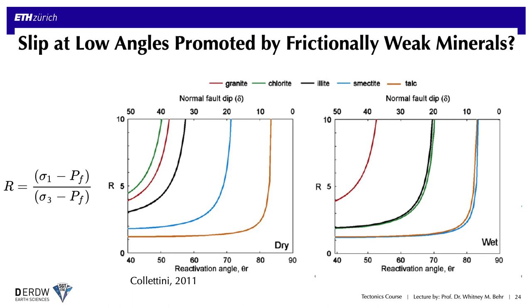So if we assume that low angle normal faults really do exist, then we pretty much have to infer that they are simply not following Byerlee's law and instead must be occupied by frictionally weaker minerals. These plots show how potentially weak minerals like certain phyllosilicates can affect the fault dip that can be activated in a normal faulting regime. The y-axis shows the stress ratio — the ratio of sigma 1 to sigma 3, both corrected by fluid pressures — and the upper x-axis shows the normal fault dip that could be activated for a given material. The plot on the left is for dry materials; the plot on the right is for wet. Minerals shown include granite as the red curves, the reference material that conforms to Byerlee's law with a high friction coefficient.